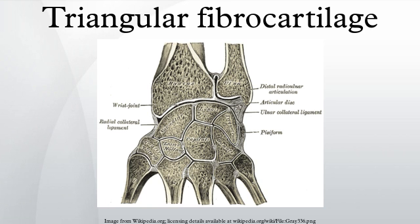The radioulnar ligaments (RULs) are the principal stabilizers of the distal radioulnar joint. There are two RULs: the palmar and dorsal radioulnar ligaments. These ligaments arise from the distal radius medial border and insert on the ulna at two separate and distinct sites: the ulnar styloid and the fovea.